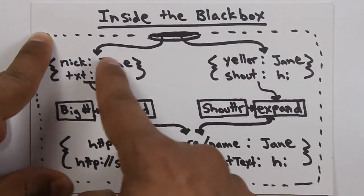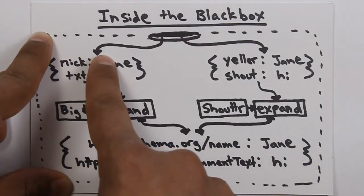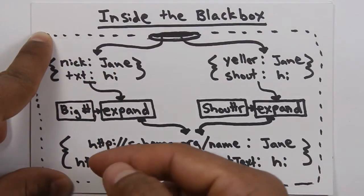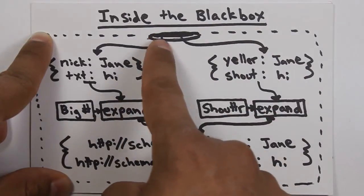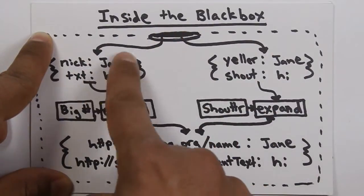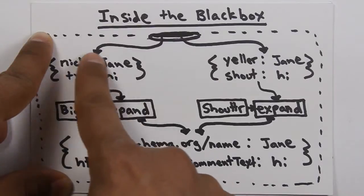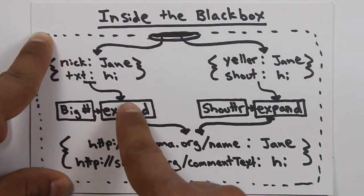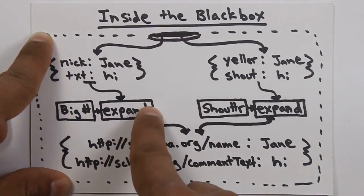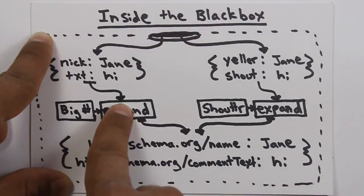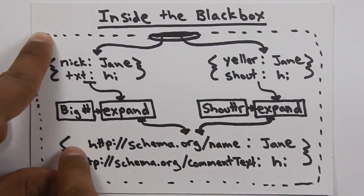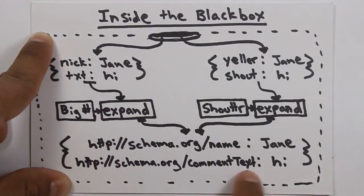Now, what we want to be able to do is take this data and modify it such that it unifies the data for our software application. And we use the expansion process to do that. So, we take the input data from the BigHash service. We feed it into the JSON-LD expansion algorithm. We provide the BigHash JSON-LD context as input to the expansion algorithm. And what we end up with is this normalized object. This is a machine readable object.